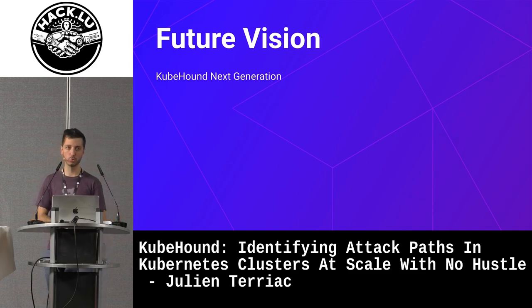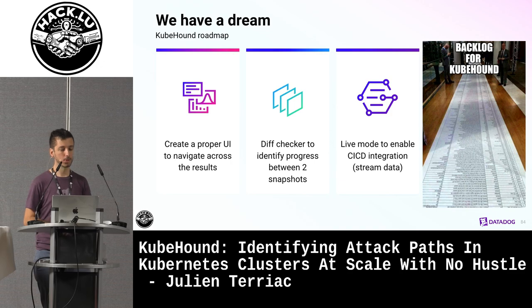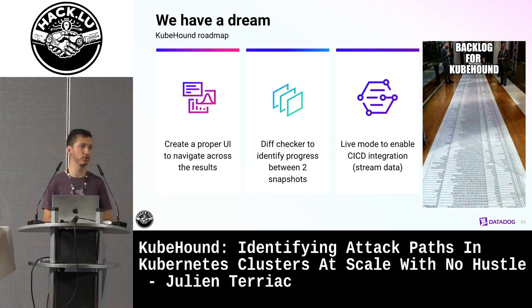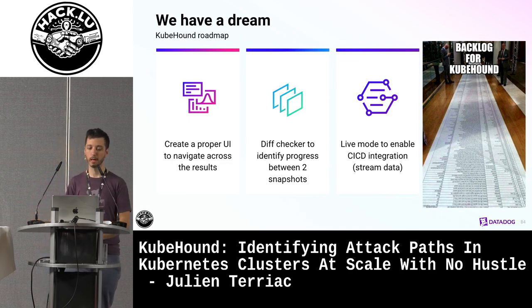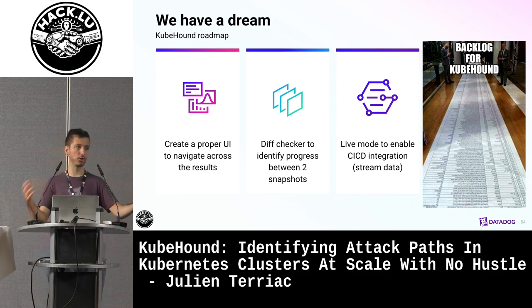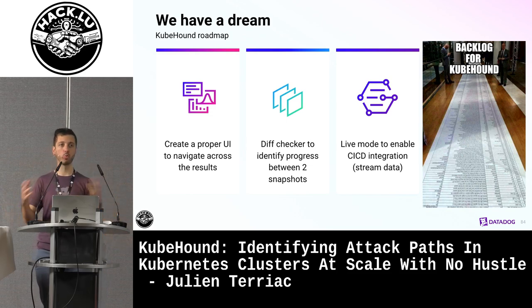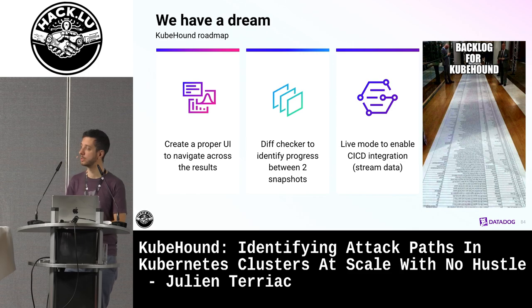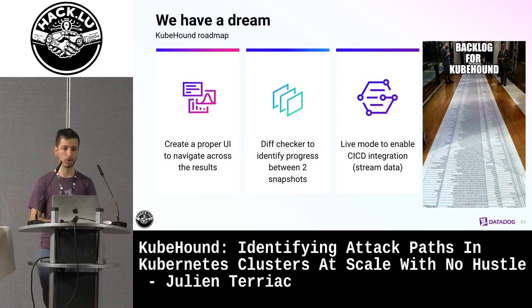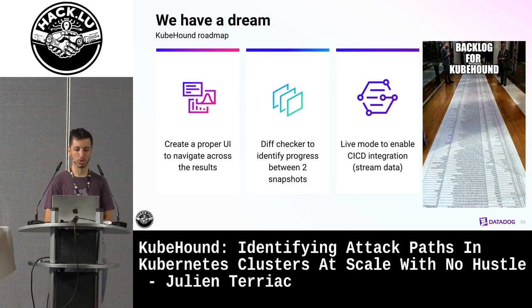For the vision of the tool and what we want to do next: we want to build a proper UI — like those Minority Report-style UIs with graph visualization. That will take a lot of effort since we don't love front-end development. We also want diff checking so you can measure security posture over time, showing what changed between two snapshots from a graph perspective. And potentially integrating into CI/CD pipelines, which is a big trend right now. There's a lot more in the pipeline for KubeHound.